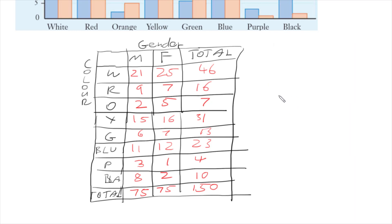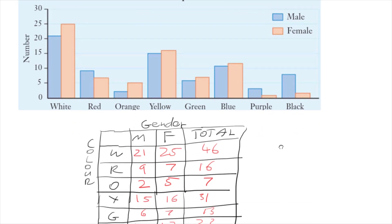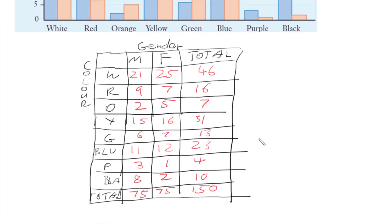So that's it. It's as easy as that to take a column graph and turn it into a two-way table.